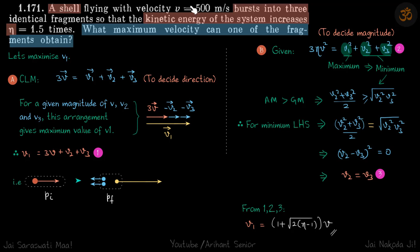A shell bursts into three identical fragments such that the kinetic energy of the system increases by η times. We need to find what maximum velocity can one of the fragments obtain. Let's say our three fragments have velocities v1 vector, v2 vector, and v3 vector, and we are going to maximize v1 in this problem.